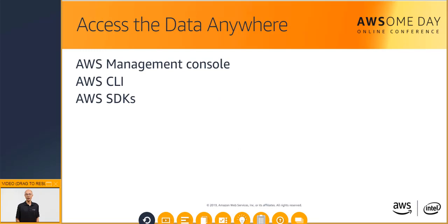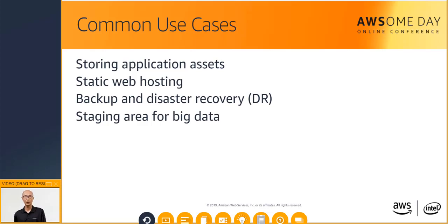You can access S3 via the management console, AWS CLI, or AWS SDK. Additionally, you can also access the data in your bucket directly via REST endpoints that support HTTP or HTTPS access. This flexibility to store virtually unlimited amounts of data and access that data from anywhere makes S3 suitable for a wide range of scenarios.